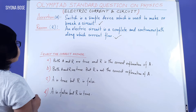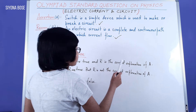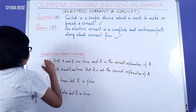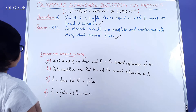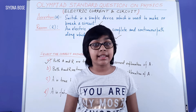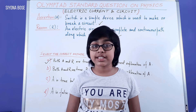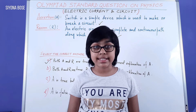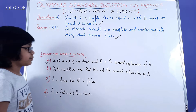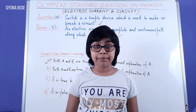So from here we can understand both A and R are true and R is the correct explanation of A, and this is our correct answer. I'm giving you a few moments to look at this question and its answer and think on how we analyzed the correct answer to sharpen your concept. Now we are moving on to our next question on the same topic.